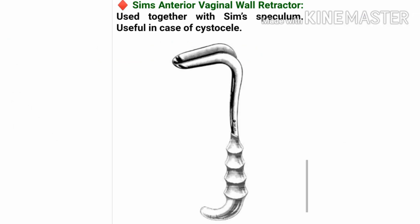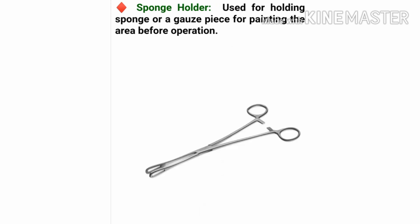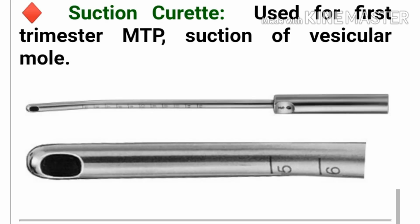This is the Sims anterior vaginal wall retractor. It is used together with the Sims speculum and is useful in cases of cystocele. This is a sponge holder, used for holding a sponge or gauze piece for painting the area before operation. This is the suction curette, used for first trimester MTP and suction of vesicular mole.